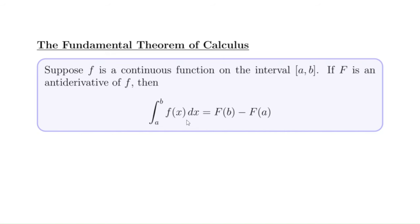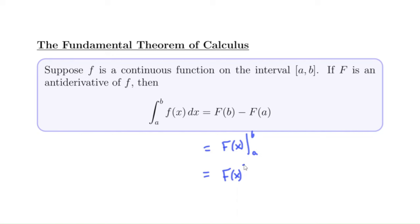The fundamental theorem of calculus says that the way we can find that area is by doing an antiderivative — finding this capital F and plugging in b, the top endpoint, then plugging in a and subtracting. There's a notation we sometimes use for this: F(x) evaluated from a to b, written with a vertical line. This just means F(b) minus F(a).